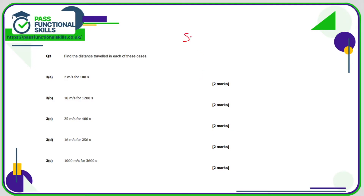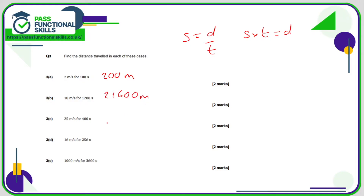We know that speed is distance divided by time, and if we move the formula around, speed multiplied by time equals distance. So all we need to do here is multiply the two figures: 2 times 100 is 200 metres; 18 times 1,200 is 21,600 metres; 25 times 400 is 10,000 metres; 16 times 256 is 4,096 metres; 1,000 times 3,600 is 3,600 with three zeros on the end.